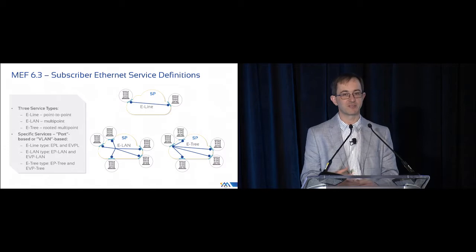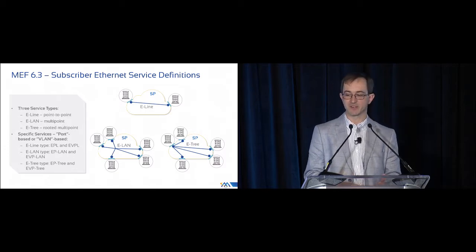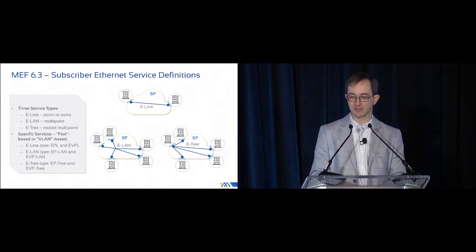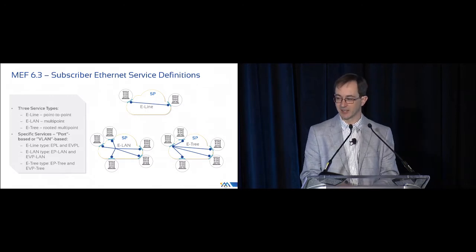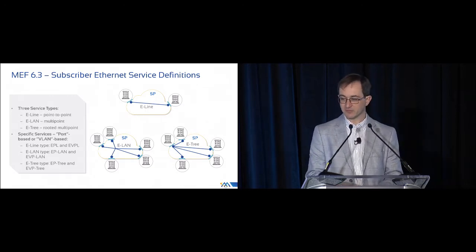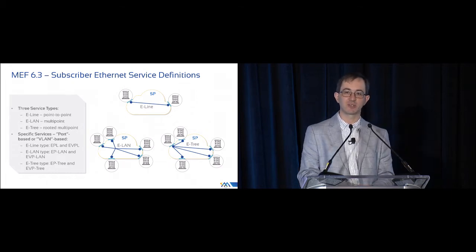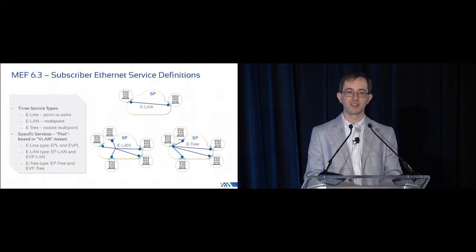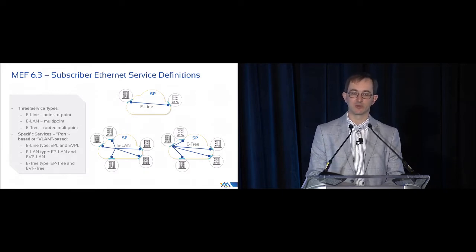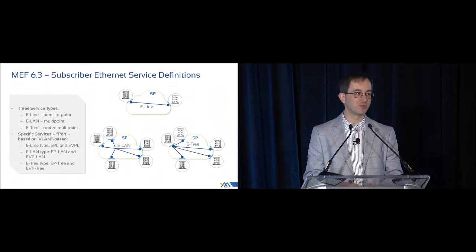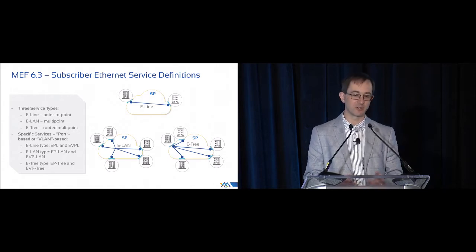Each of those has a port-based variant and a VLAN-based variant, giving us EPL, EVPL, EP-LAN, EVP-LAN, EPP-tree, and EVP-tree. The reason we call it rooted multipoint rather than hub-and-spoke is that you can have multiple roots — two, three, or as many as you like. The rule is that leaves can't talk to leaves, but roots can talk to anyone.